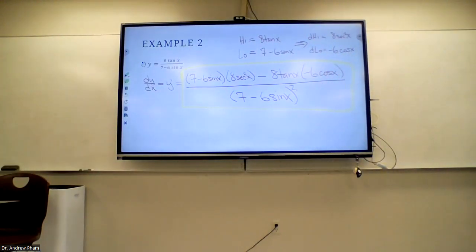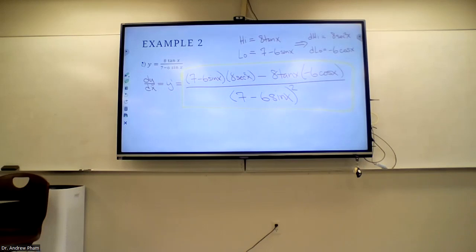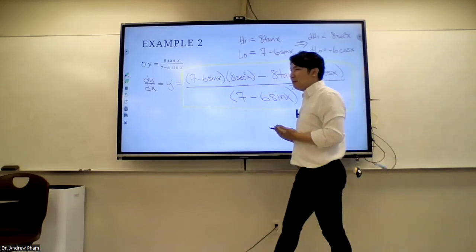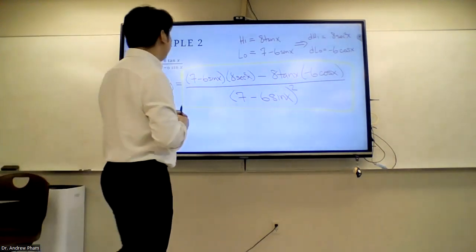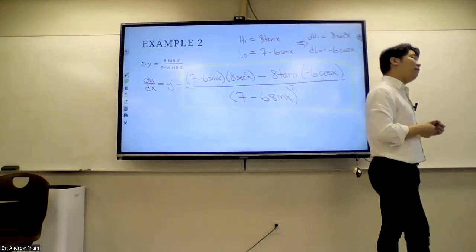Any questions about how we completed example two part c? I'm more concerned about whether you can do the calculus part, since simplification is more of an algebra skill. There will be later problems where I might ask you to simplify, but generally this is perfectly fine. If you get zero times something you can clean it up right away, but if there's no obvious simplification, leaving it in this form is acceptable.